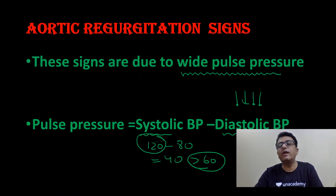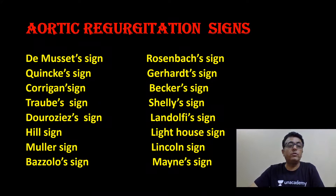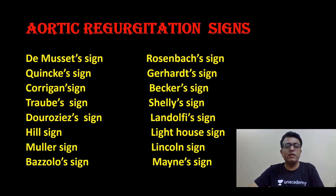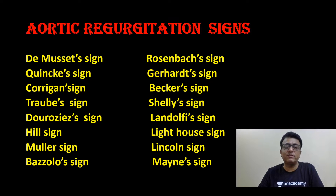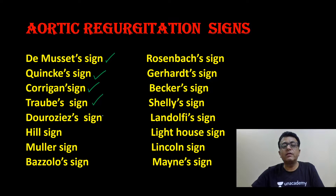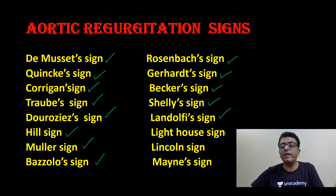All the signs of AR are due to wide pulse pressure. The final list of signs you need to remember: De Musset sign, Quincke sign, Corrigan sign, Traube sign, Duroziez sign, Hill sign, Muller sign, Bozzolo sign, Rosenbach sign, Gerald sign, Baker sign, Shelley sign, Landolfi sign, Lighthouse sign, Nicole sign, Minas sign.